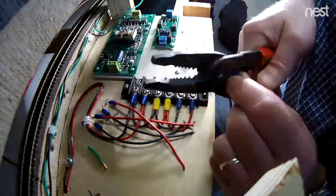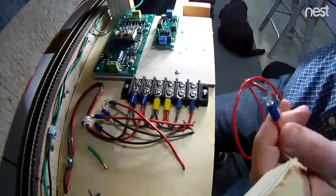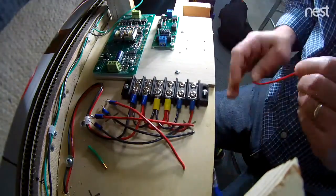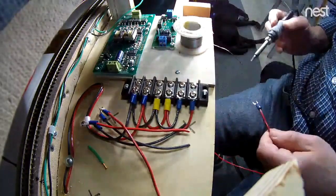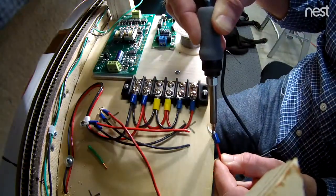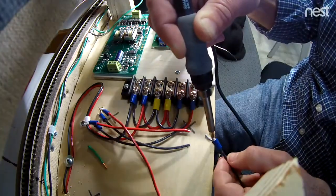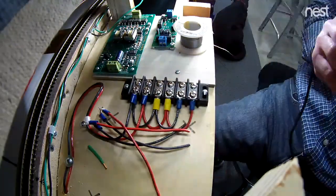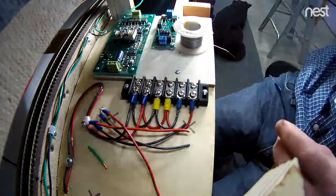My two spade connectors, which will go onto the terminal strip side, they get a crimp and some liquid flux. Then I'm using a variable heat soldering iron. This one is set to 690 degrees. I have a 3.2 millimeter chisel tip on it, which seems to work pretty well for these heavier connections.